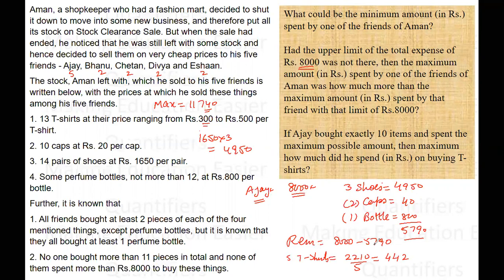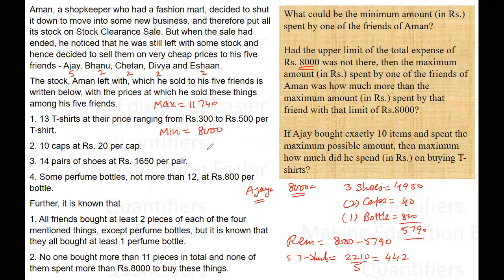The concern was whether it is actually possible for a person to spend 8000 rupees under the given conditions, and yes it is — a person can spend at most 8000 rupees. So the question is asking for the difference. The maximum amount without the upper limit is 11,740 rupees, and the maximum with the limit is 8000 rupees. The answer is 11,740 minus 8000, which is 3740 rupees.